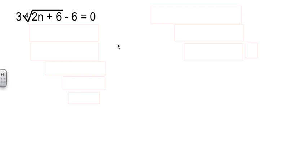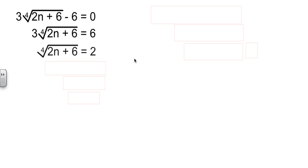We need to get the radical isolated. So first thing we'll do is move the 6. And then we'll divide by the 3. To get it down to the fourth root of some stuff equals 2.